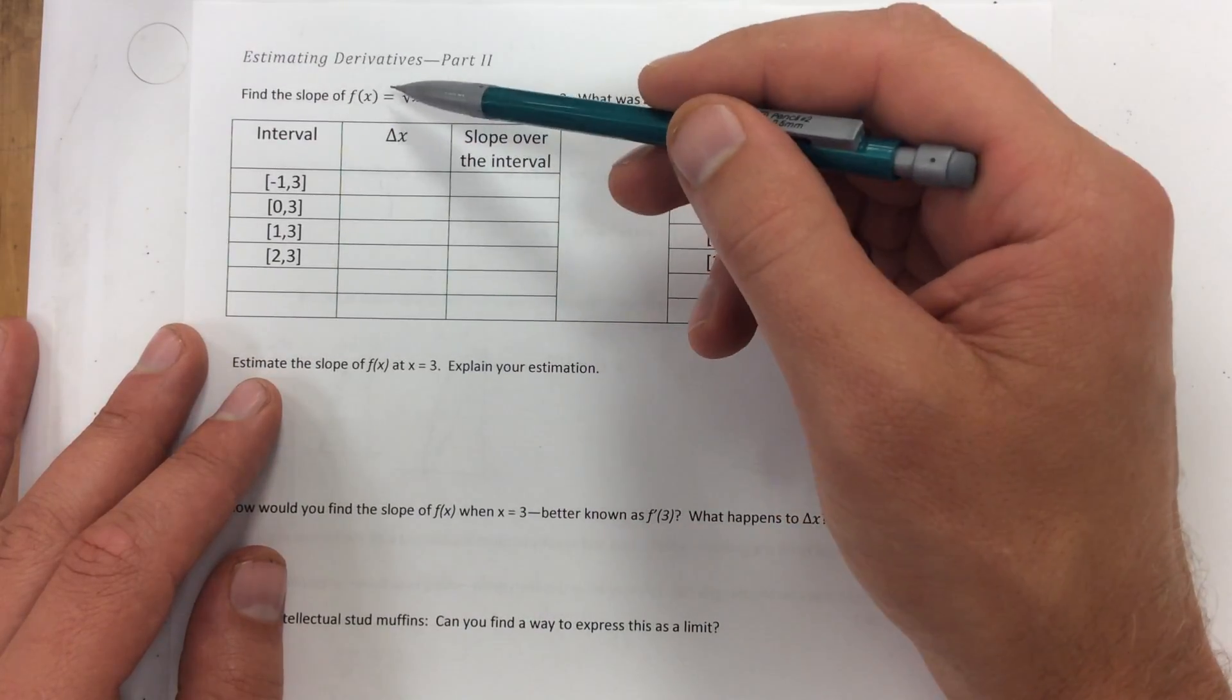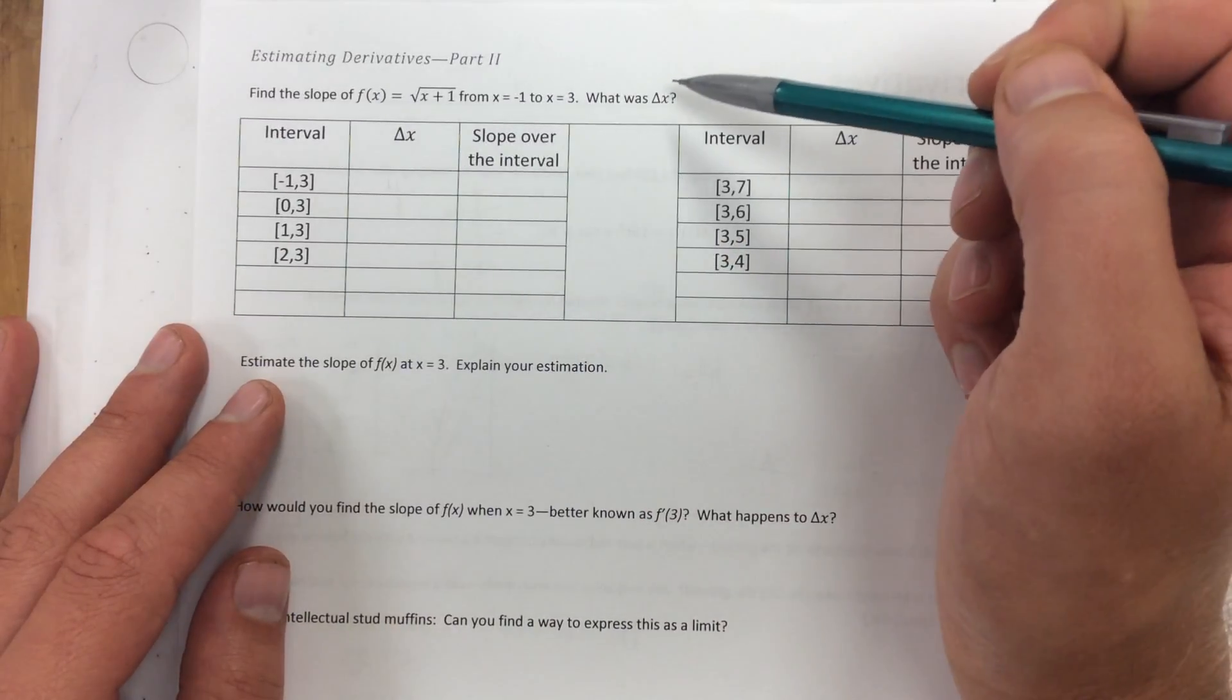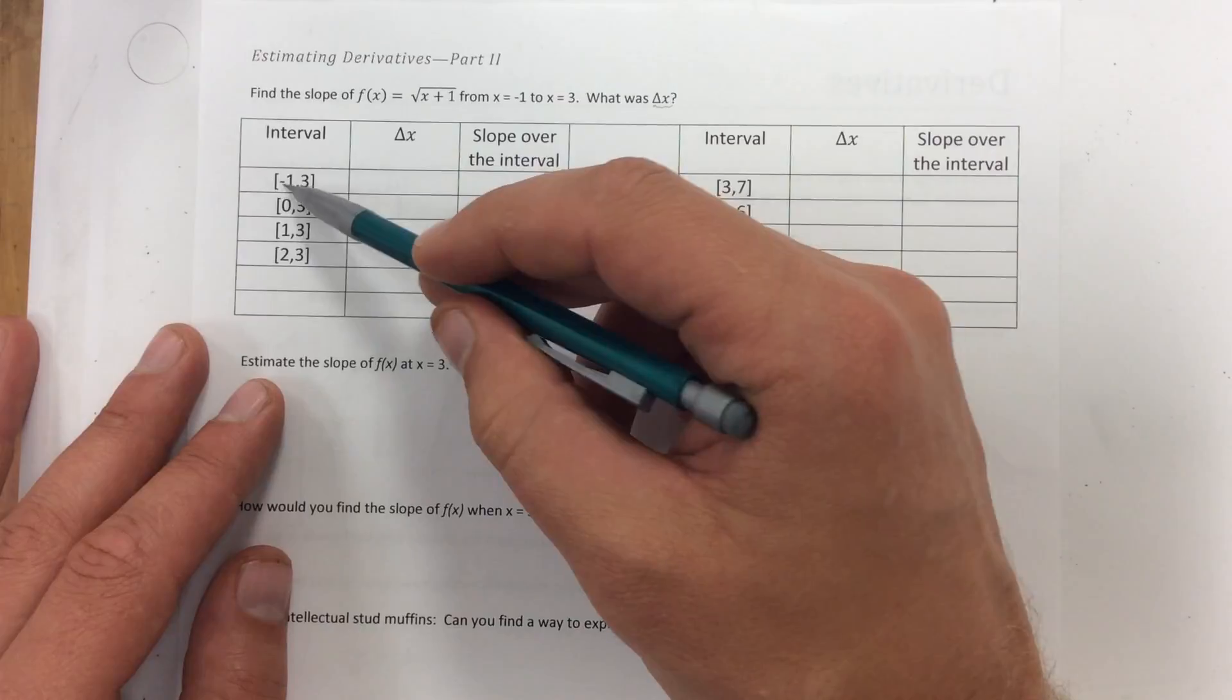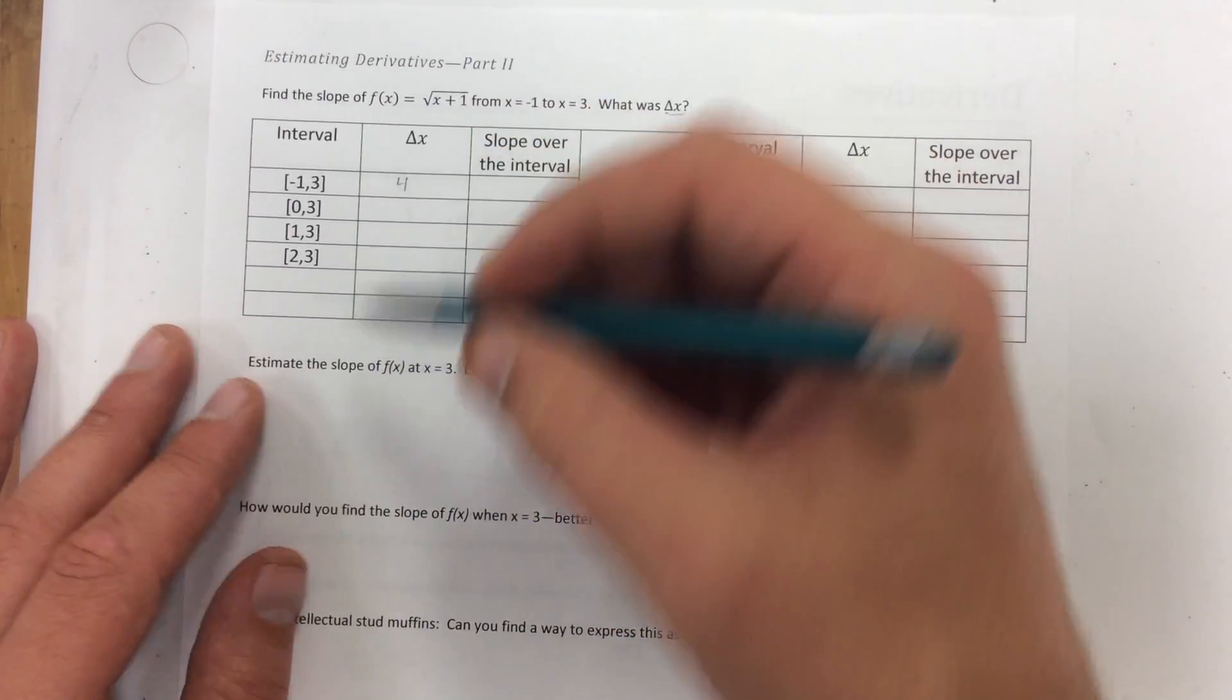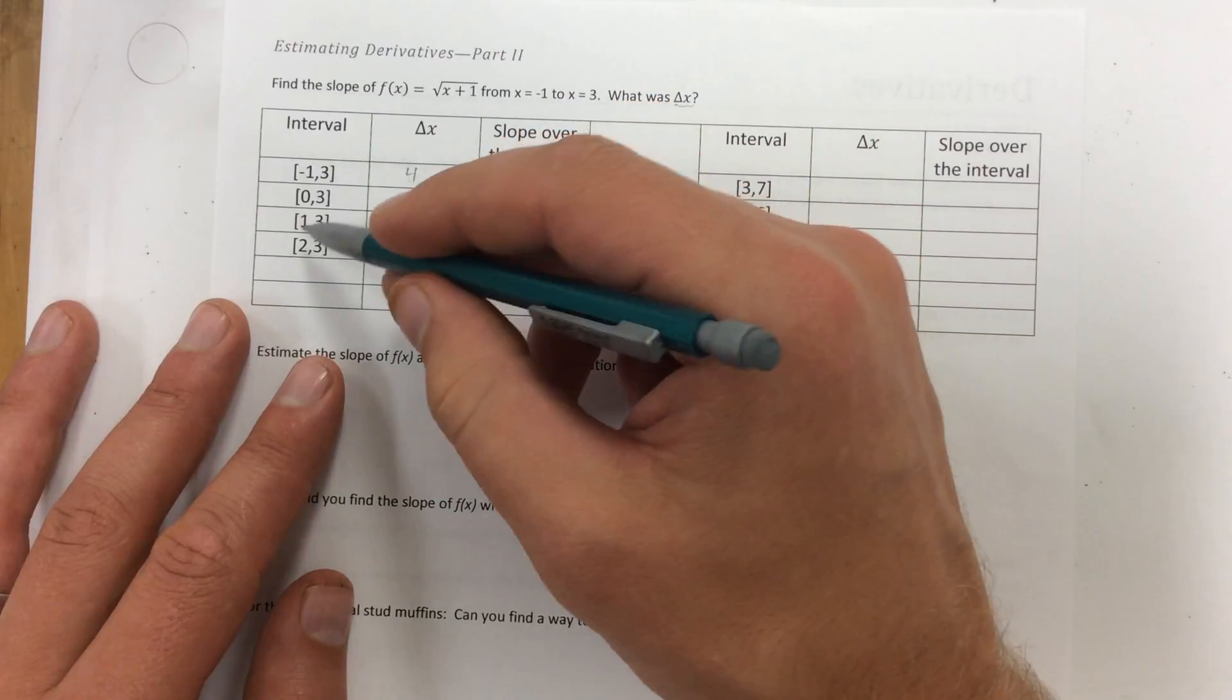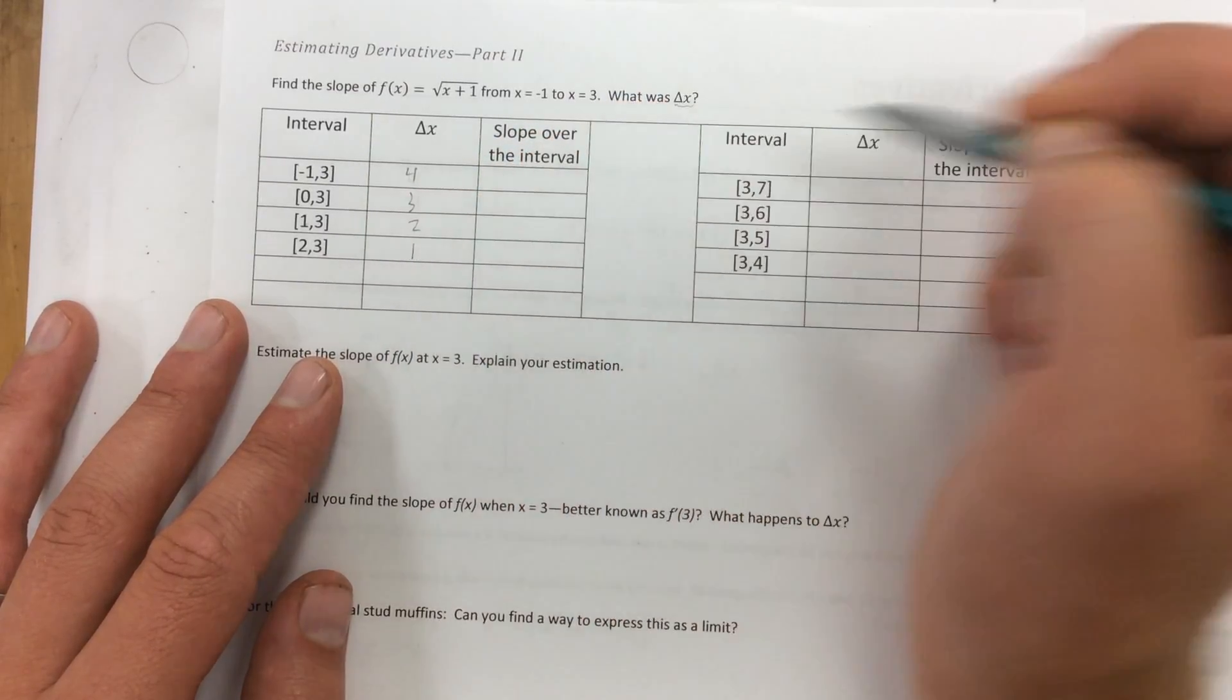Alright, we're going to find the slope of f(x), which is the square root of x plus 1, from negative 1 to 3. And we're going to find the change in x. The change in x is the interval. Well, from negative 1 to 3, the change in x there is going to be 4. The change in x here is going to be 3. From 1 to 3, the change in x here is 2. From here to here, it's going to be 1.